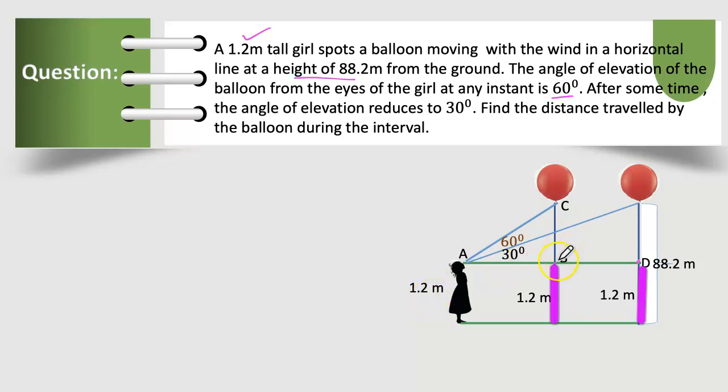So the height of triangle ABC is given here, BC is 87m, 88.2 minus 1.2m. DE also the same, 87m.